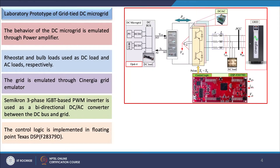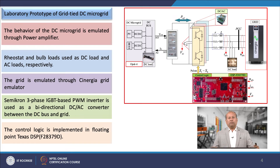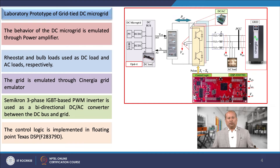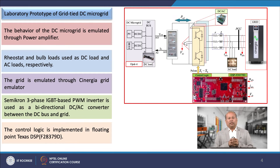Looking at the laboratory prototype of the grid-tied DC microgrid, this slide shows the block diagram of the hardware test bed. In this hardware test bed, the DC microgrid behavior is emulated through a power amplifier by configuring it with Opal-RT. In the Opal-RT, the DC microgrid is simulated, which contains PV, battery, and variable DC loads. The scaled-down DC bus voltage is given as the analog input of the power amplifier, and the current fed to this power amplifier is given to the analog input of the Opal-RT. This creates a PHIL loop between the Opal-RT and the power amplifier.